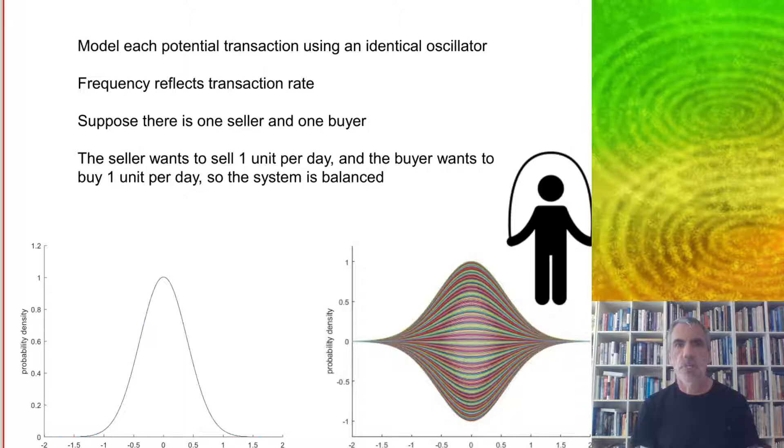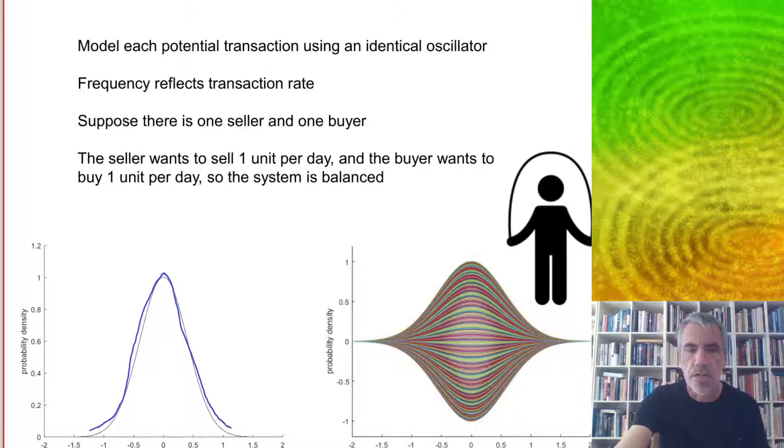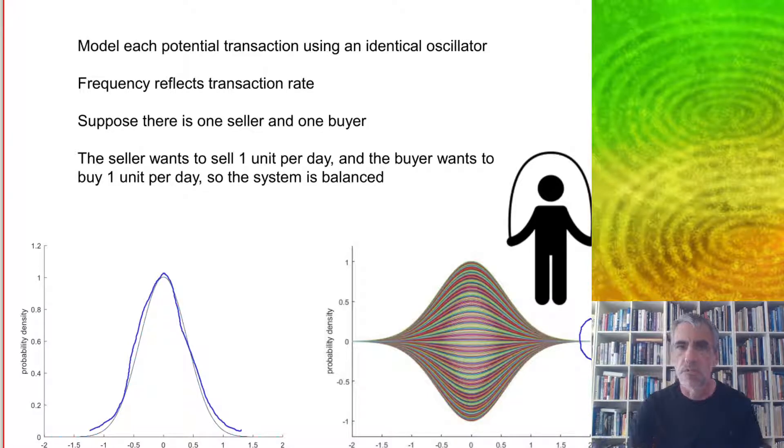So to see this, let's start with a simple case where there's just one seller and one buyer. We'll model each potential transaction, in this case just one, using an oscillator, and the frequency is going to reflect the transaction rate. As usual, the propensity curve will have a normal propensity curve, and that is generated by a complex wave function which is rotating around the real axis, and the frequency of the rotation is equal to the transaction rate.